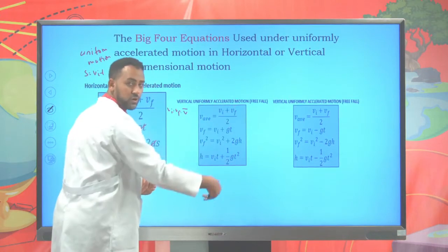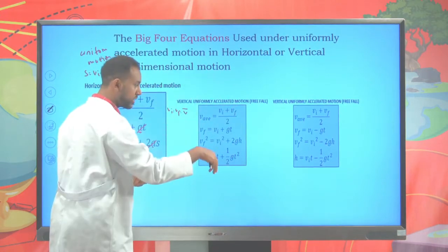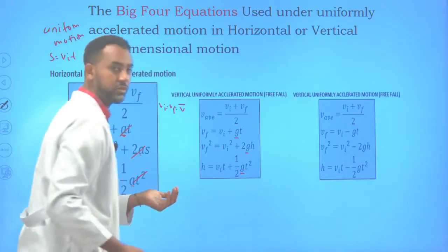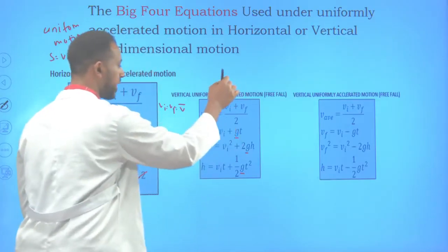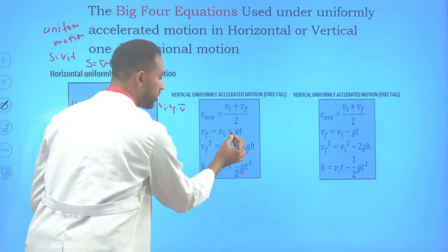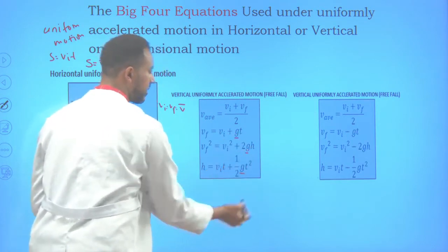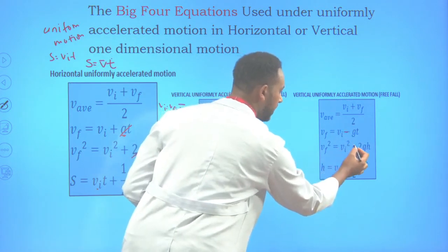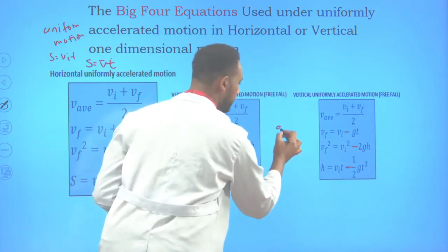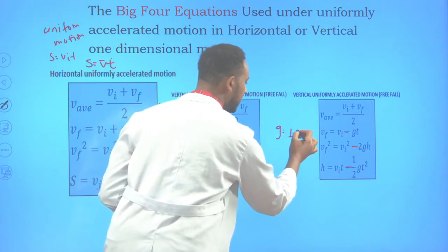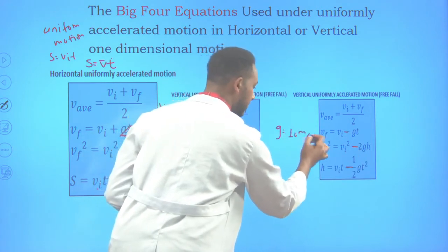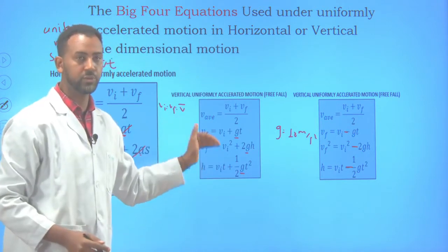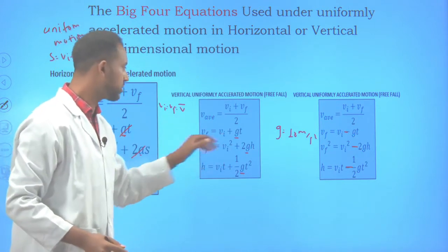For freefall — objects thrown upward or downward — remember to substitute gravity for acceleration. For objects thrown downward, use a plus sign for gravity. For objects thrown upward, use a minus sign convention. Gravity is taken as positive 10 m/s² for calculation purposes. Use these big four equations for uniformly accelerated motion.